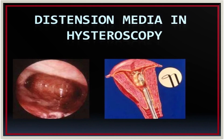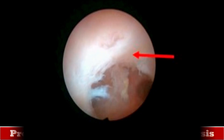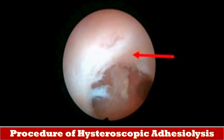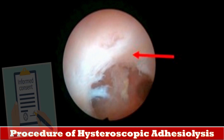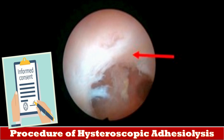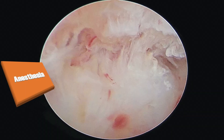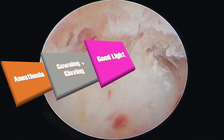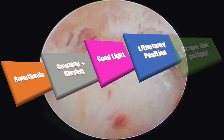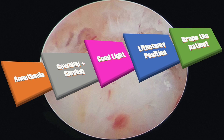The uterine distending media is used to allow the global view of the endometrial cavity in this process. Before explaining the whole procedure of hysteroscopic adhesiolysis, it is very important to explain the pros and cons of this procedure and take an informed consent. This procedure is performed under proper anesthesia, gowning and gloving, good light, lithotomy position, and by draping the patient in a sterile manner.